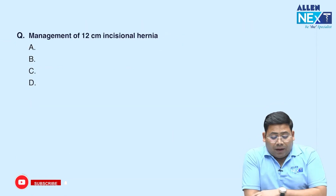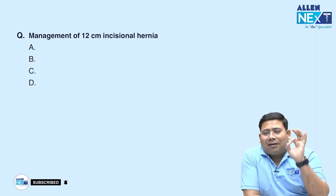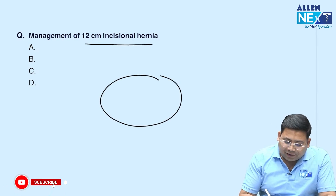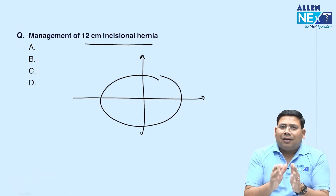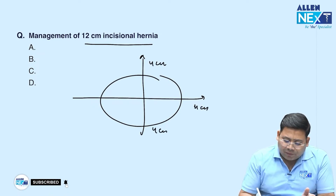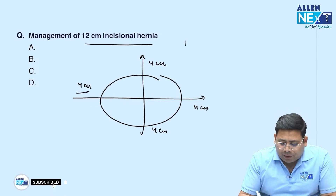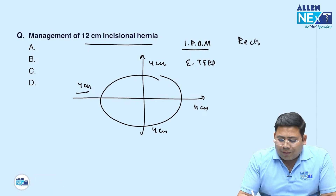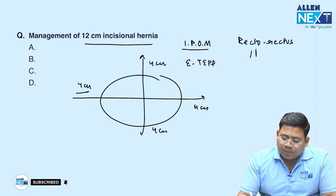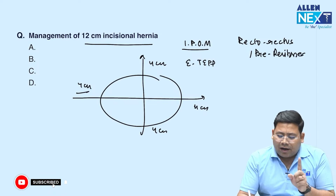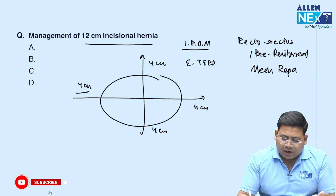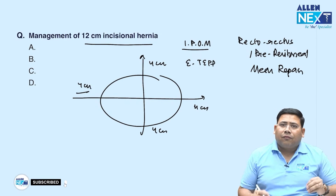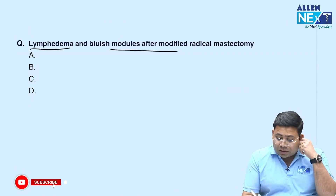Next: management of a 12-centimeter incisional hernia. For any hernia, at least 4 centimeters extra mesh repair should be done. The surgery involves reduction with mesh repair. Laparoscopically, IPOM or extended TAP repair is performed. If open, retrorectus mesh repair or pre-peritoneal mesh repair is used. Anatomical repair is only for smaller defects. I think two questions were asked on hernia.